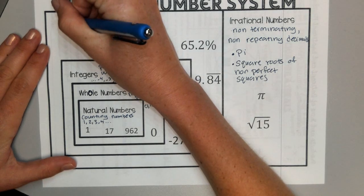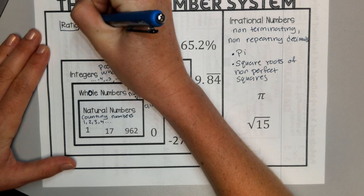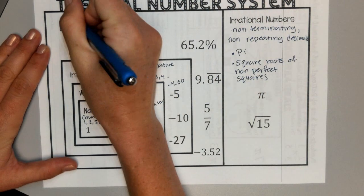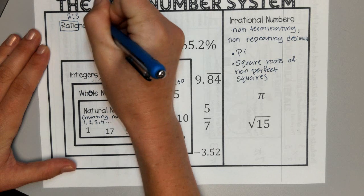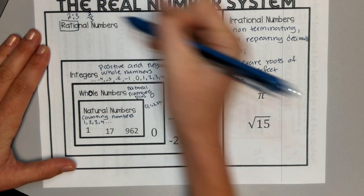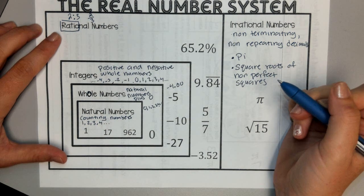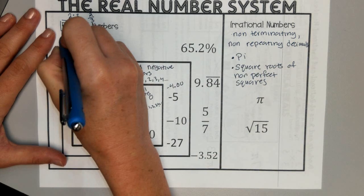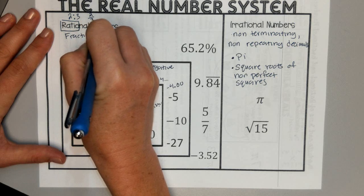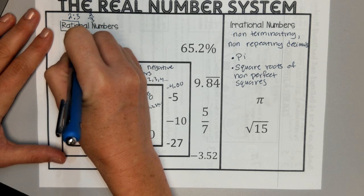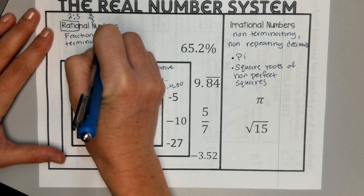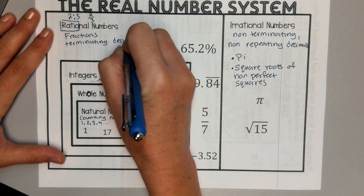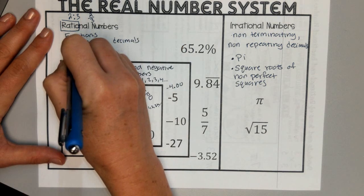And our rational numbers are our nice numbers. They have this word ratio in it. When you learn about ratios 2 to 3, you could also write as the fraction 2 thirds. So our rational number is anything that can be put in the form of a fraction. So that's fractions, terminating decimals, and repeating decimals.